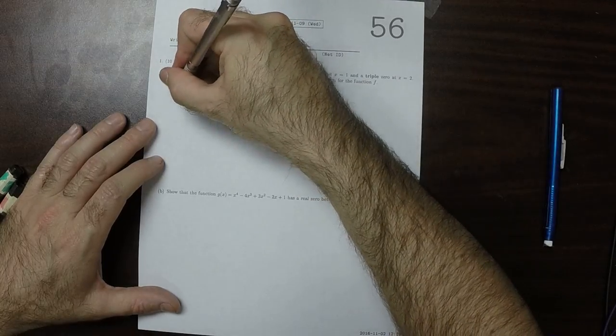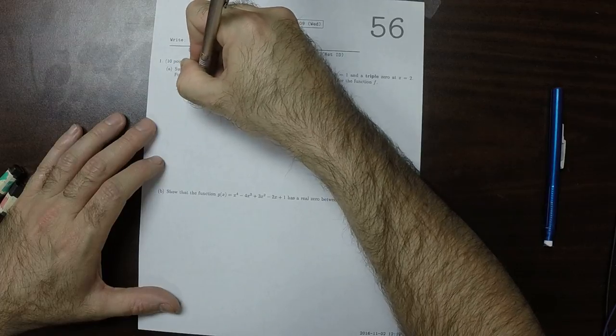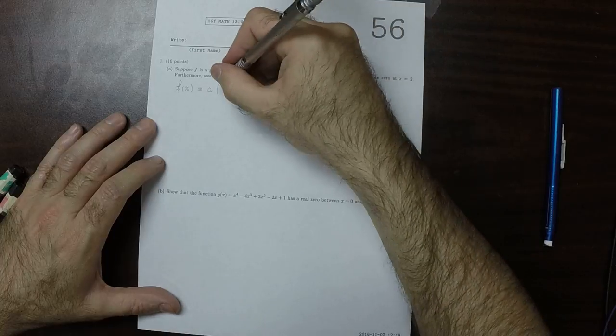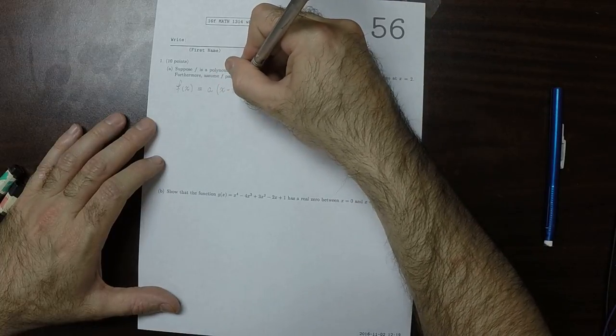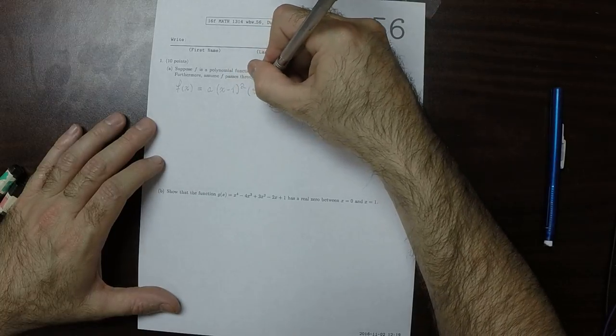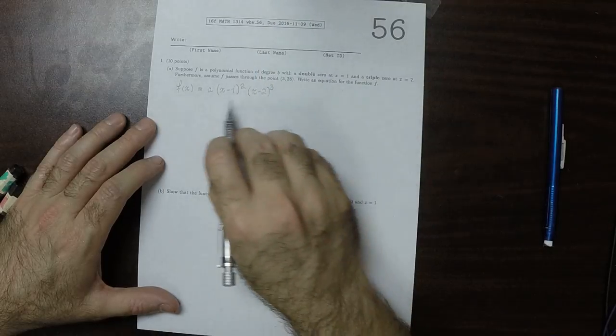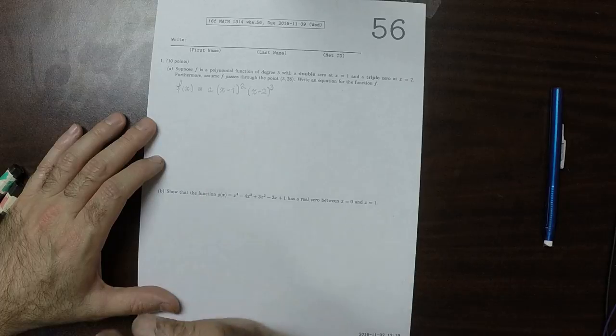So what that tells us is that f of x is some a multiplied by x minus 1 squared, multiplied by x minus 2 cubed. Now that's degree 5, so a polynomial of degree 5. So it must be of this form.